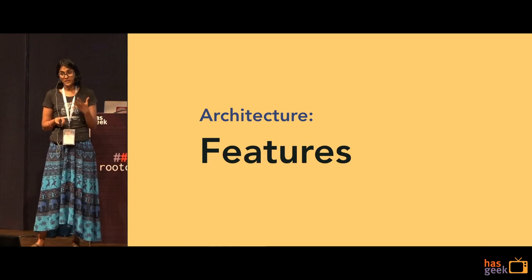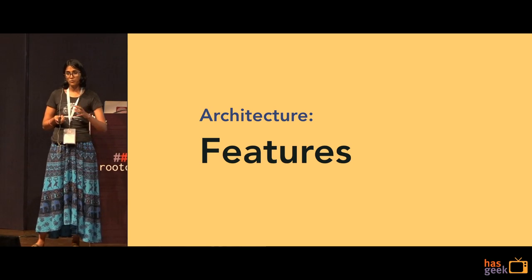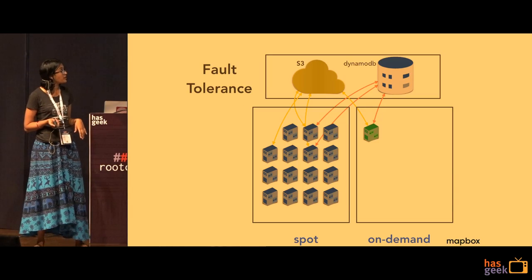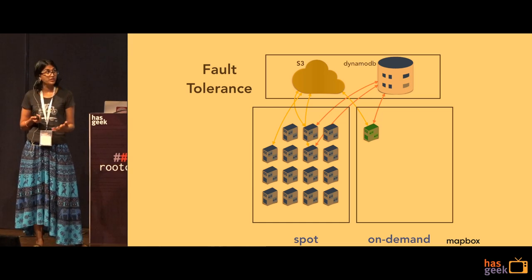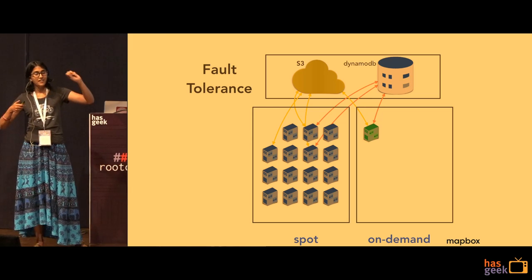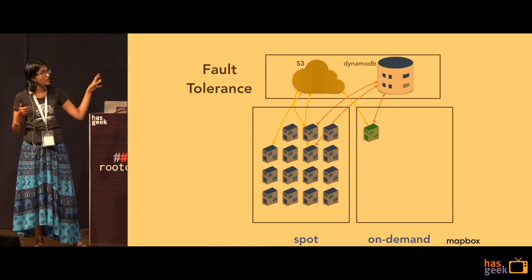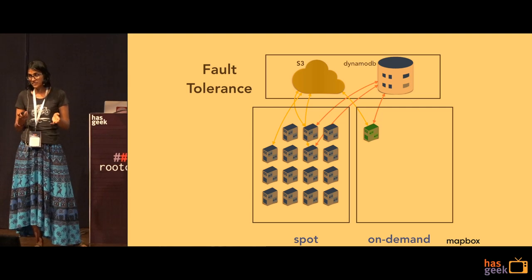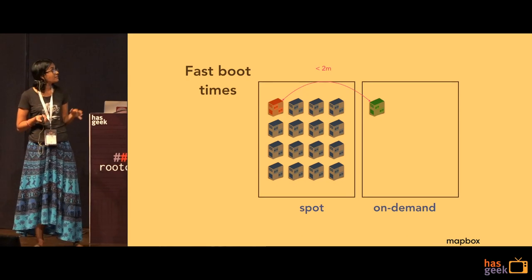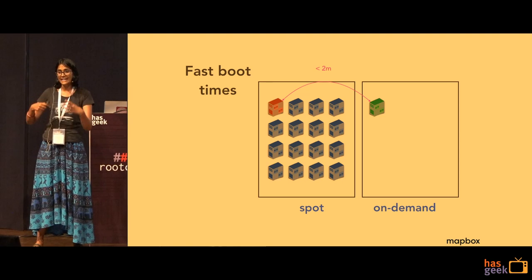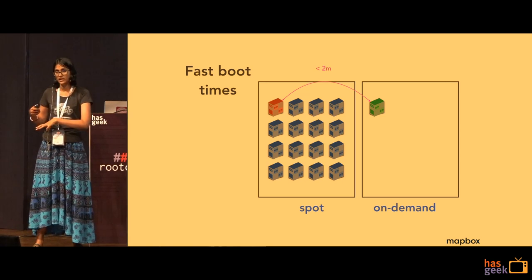So this is what SpotSwap is. Before going into the details, I want to talk about two architectural features at Mapbox that made SpotSwap possible. First, our systems are very fault tolerant — all our persistent data is stored on hosted, resilient, and scalable databases like Amazon S3 and DynamoDB, and this data is accessed remotely by each EC2, so the EC2 itself does not store any persistent data. Secondly, our EC2s have very fast boot times — under two minutes to become healthy and serve traffic.